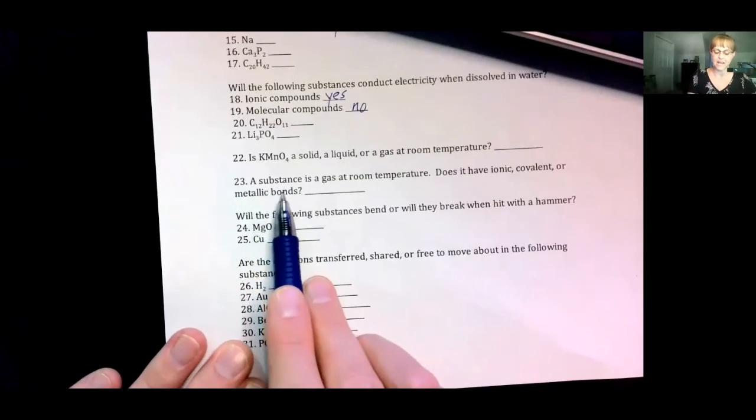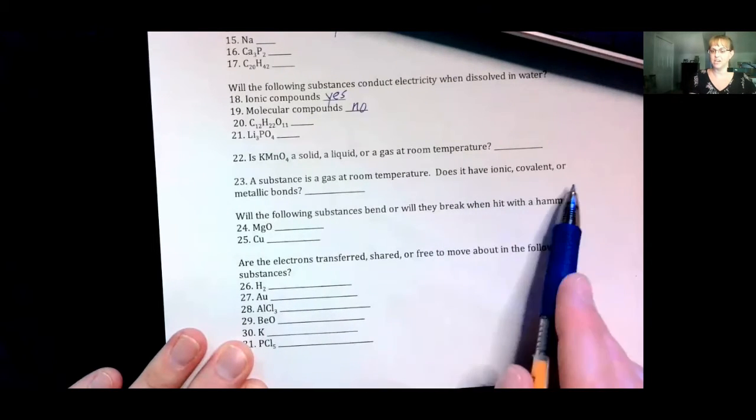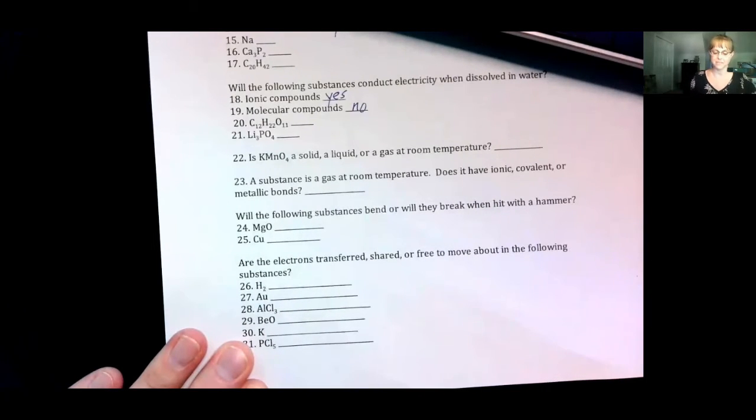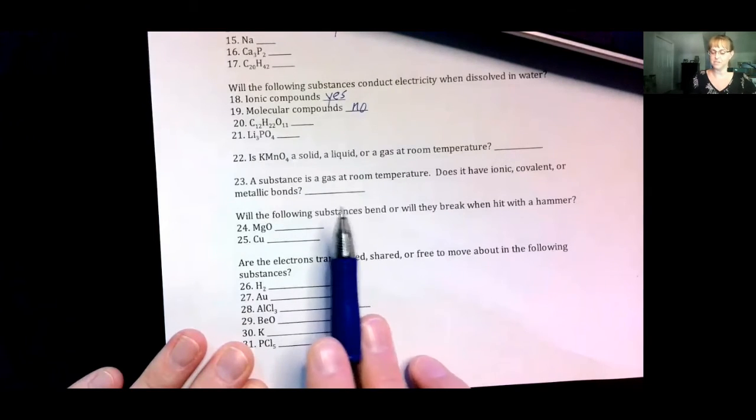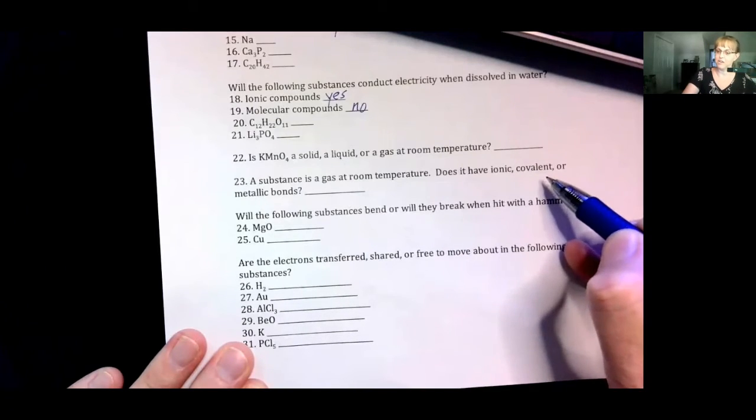Number twenty-three, a substance is a gas at room temperature. Does it have ionic, covalent, or metallic bonds? Remember, ionic compounds and metals are almost always solids. You can have mercury, which is a liquid, for a metal. But a molecule can be a solid, liquid, or gas. Molecules have covalent bonds.